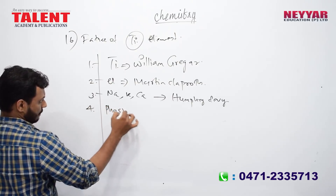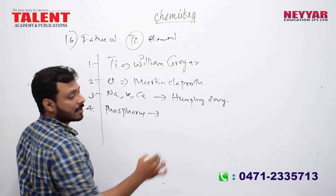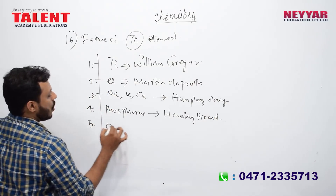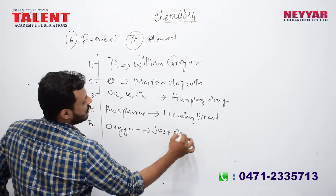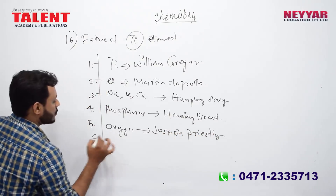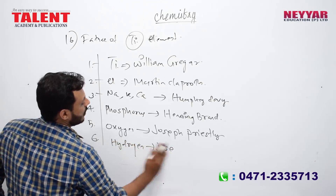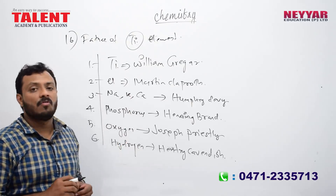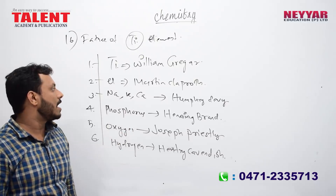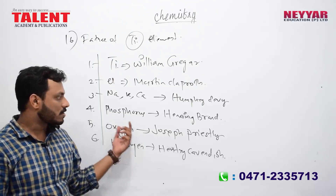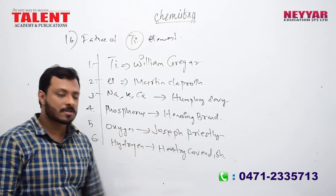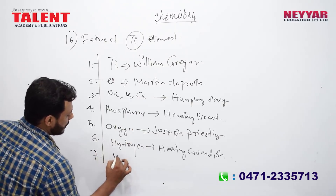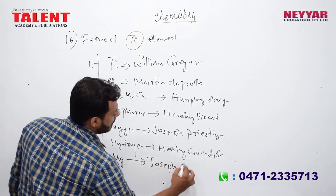Now we are going to talk about phosphorus. Phosphorus was discovered by Henning Brand. Oxygen was discovered by Joseph Priestley. Hydrogen was discovered by Henry Cavendish. Magnesium was discovered by Joseph Black. Titanium was discovered by William Gregor. Uranium was discovered by Martin Klaproth.